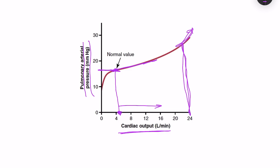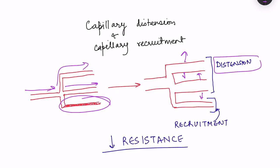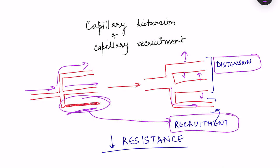The resistance falls due to two phenomena: capillary distension and capillary recruitment. At normal resting conditions, certain capillaries are in a closed state. When cardiac output increases, some capillaries undergo distension — they widen to accommodate more blood. Capillaries that were previously closed are opened by the increased pressure, creating additional pathways for blood flow. This opening of previously closed capillaries is known as capillary recruitment.